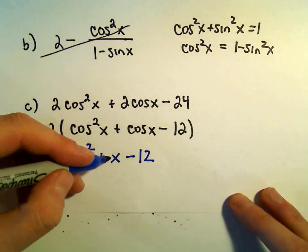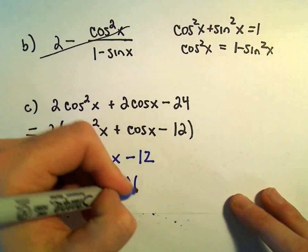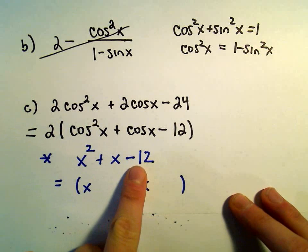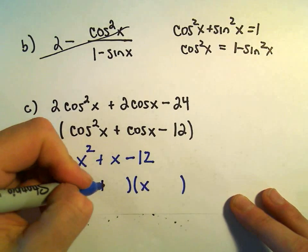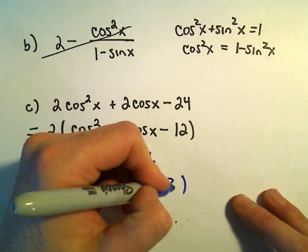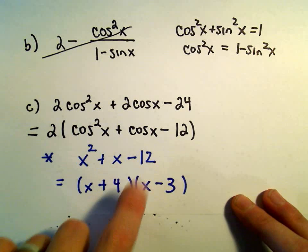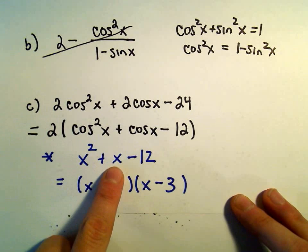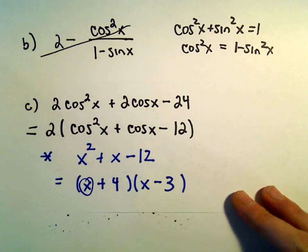How does x² + x - 12 factor? That's going to factor rather nicely. We need two numbers that multiply to negative 12 but add up to positive 1. We could use positive 4 and negative 3. That's how x² + x - 12 would factor. But we have cos²x + cosx - 12, so I'll just replace the x's with cosx.